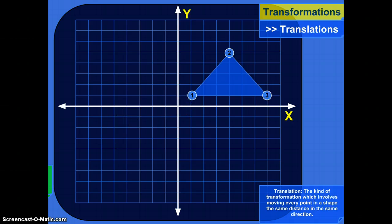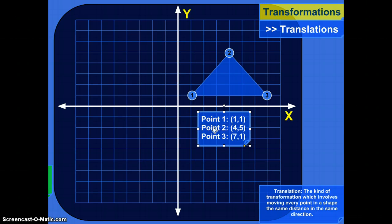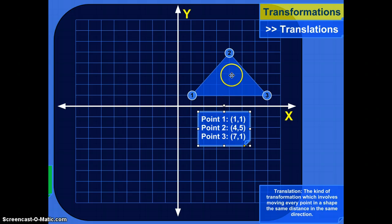Let's write down where each of those points is located. Point 1 is at x = 1, y = 1. Point 2 is at 1, 5. Point 3 is at 7, 1.